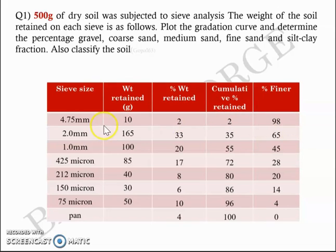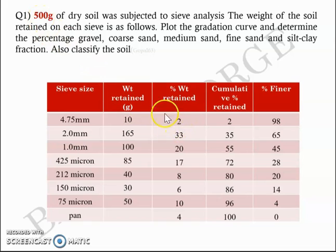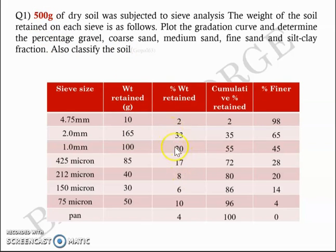For example, 10 grams is retained on 4.75 mm, so 10 divided by 500 multiplied by 100 will give you 2 percentage. 165 divided by 500 multiplied by 100 will give you 33 percentage. Likewise, you'll get the percentage weight retained.